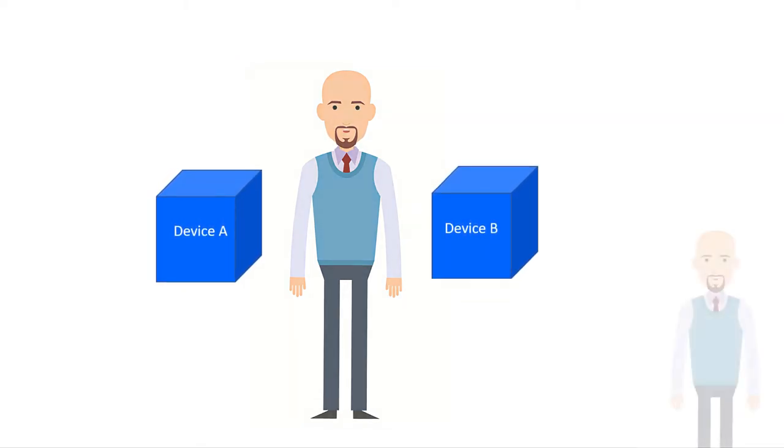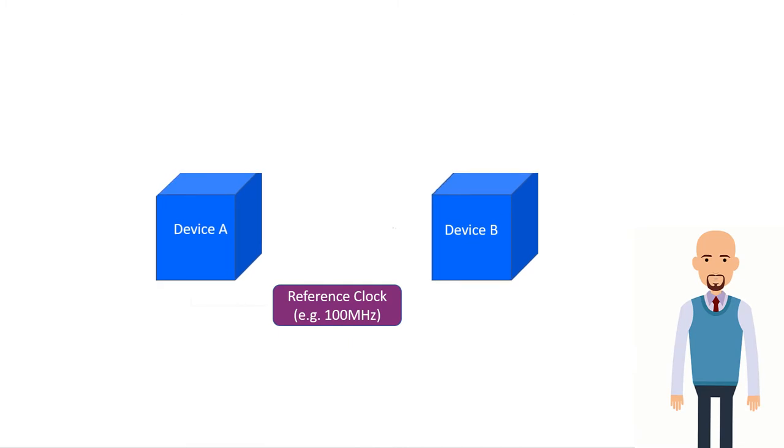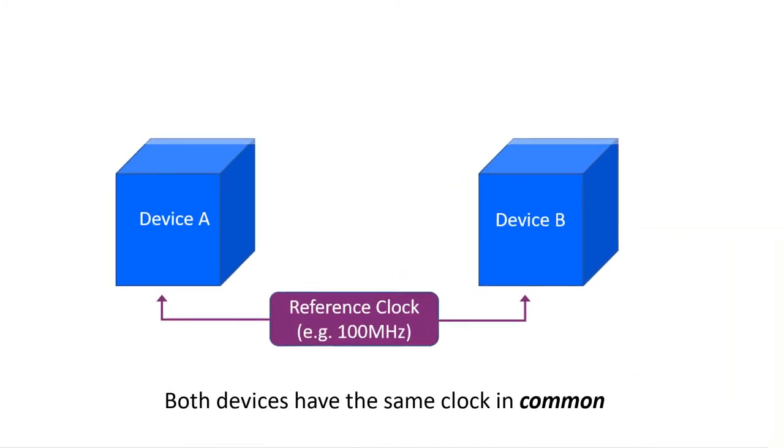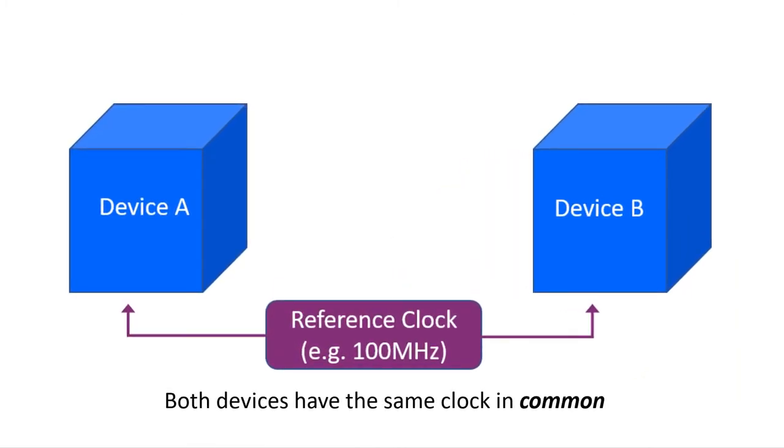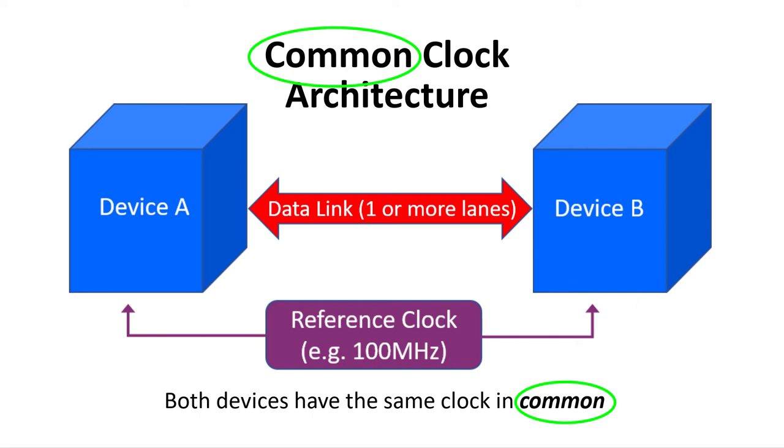Next, let's have them driven by the same clock reference. We see that what they have in common is this reference clock. Let's add in the data link, and now we have a simple representation of the Common Clock Architecture.